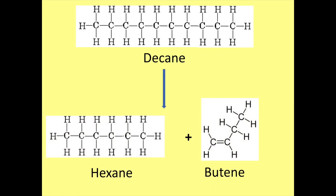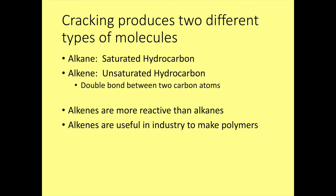Here we're cracking decane again, but this time into hexane and butene. With butene, it's a bit like butane because it has four carbons — that 'bute' prefix is due to the number of carbons in the chain — but again it has the 'ene' because it's an alkene with a double bond. When we looked at alkanes, we called them saturated as they only have single bonds. Alkenes, therefore, are described as unsaturated as they contain at least one double bond, meaning not as many hydrogens can be bonded to the carbons as in an alkane.